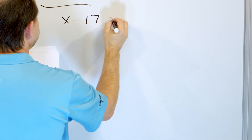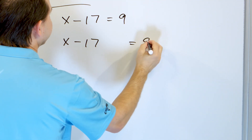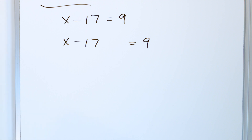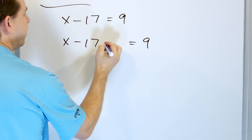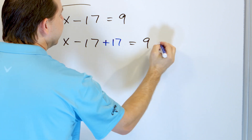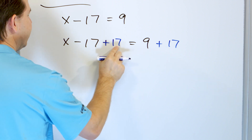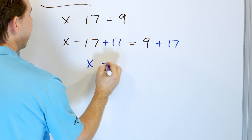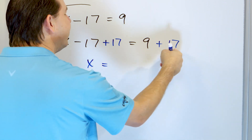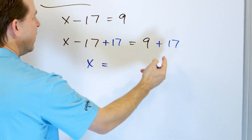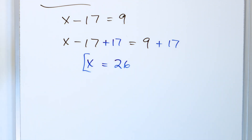Problem 4: x minus 17 equals 9. We have subtracted 17, and we want to get x by itself, so we undo it by adding 17. On the left, negative 17 plus 17 is 0, so we're left with x. And here we have 17 plus 9 — if it were 17 plus 10, it would be 27, so this must be 26. The answer is x equals 26.